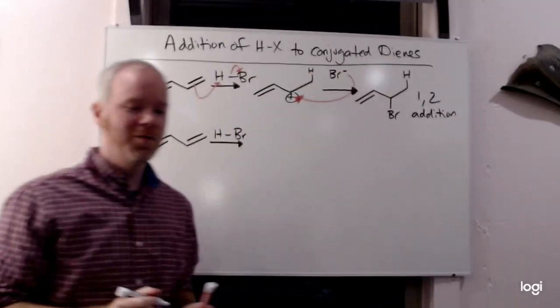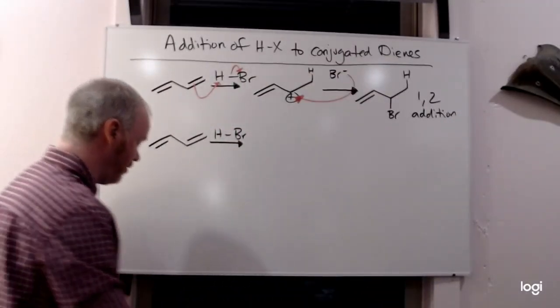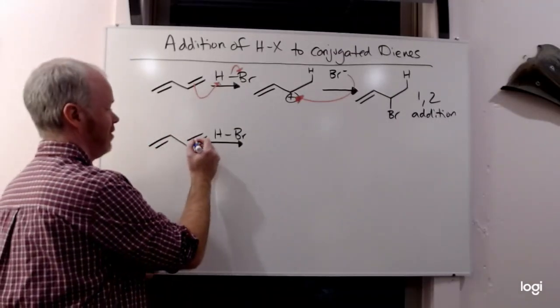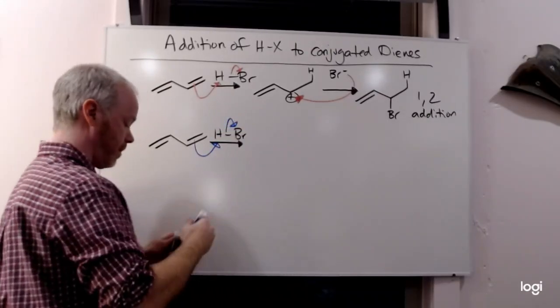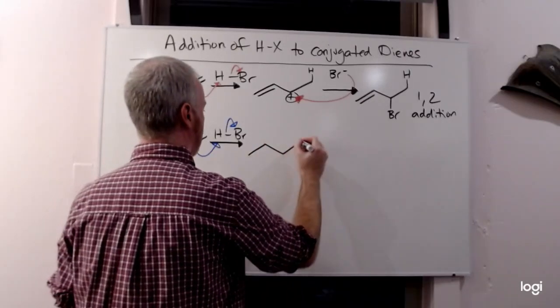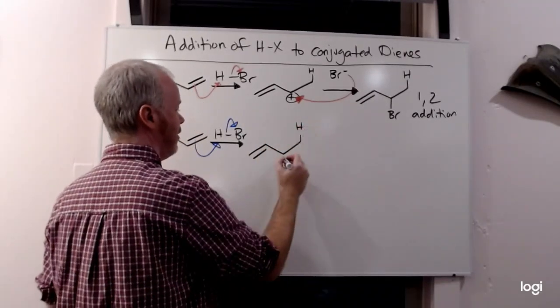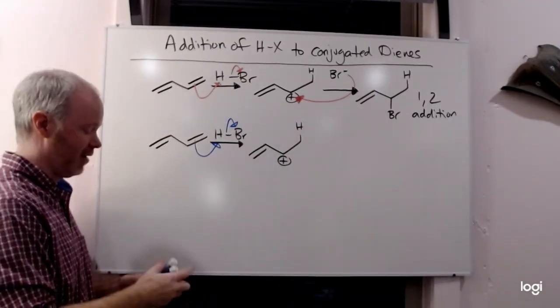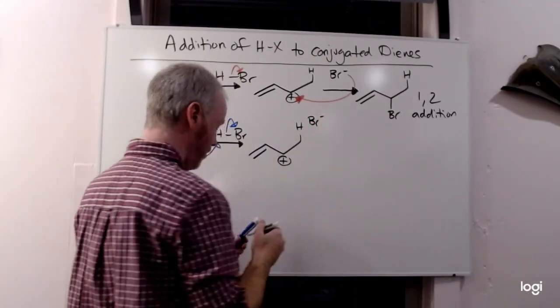The other possibility is if the resonance gets involved. Either way, the mechanism is going to start the same. And it's always going to be favored that the hydrogen adds to give you the more stable carbocation. There's no other options there. We're going to have our Br minus left over.